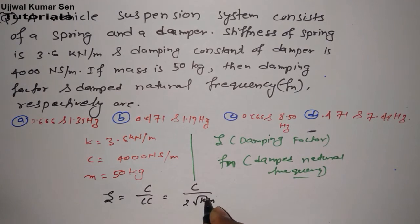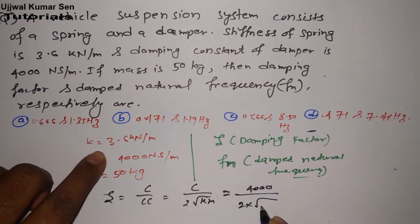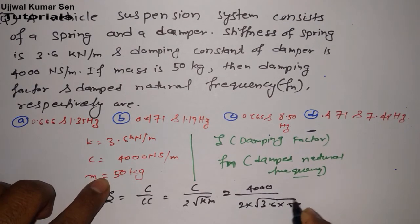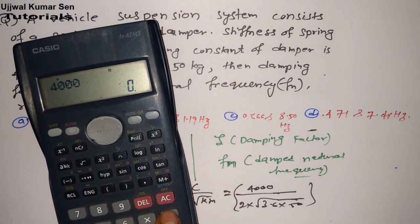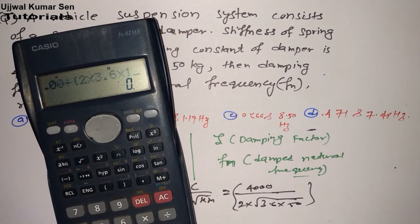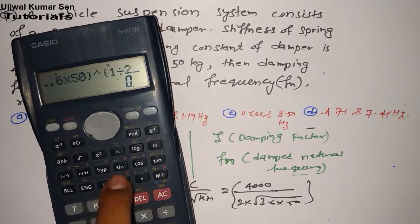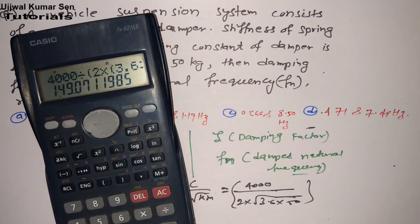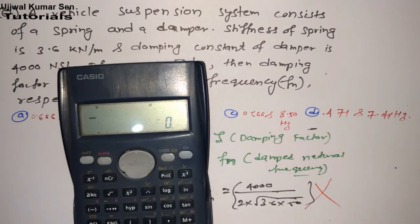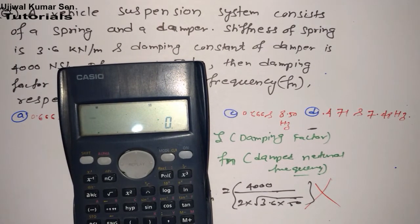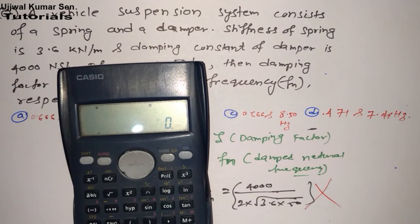What is the formula for finding out damping factor? Zeta is equal to c by cc. So c by 2√(km). So what is c here? 4000, 2, km, k is 3.6, m is 50 kg. So we will do calculation: 4000 divided 2 multiple 3.6 multiple 50, 1 divided 2. Oh this is the right answer. Can you guess this right answer? No. This is the wrong approach. If you are solving like this then you are making a mistake.